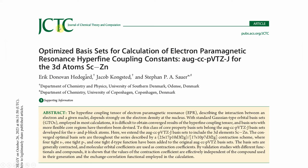This is a paper published in JCTC. In this paper they have calculated the electron paramagnetic resonance hyperfine coupling constant for some known metal complexes. I am going to choose one of the metal complexes from this paper, do a test calculation, and compare our obtained result with the paper result and experimental results.